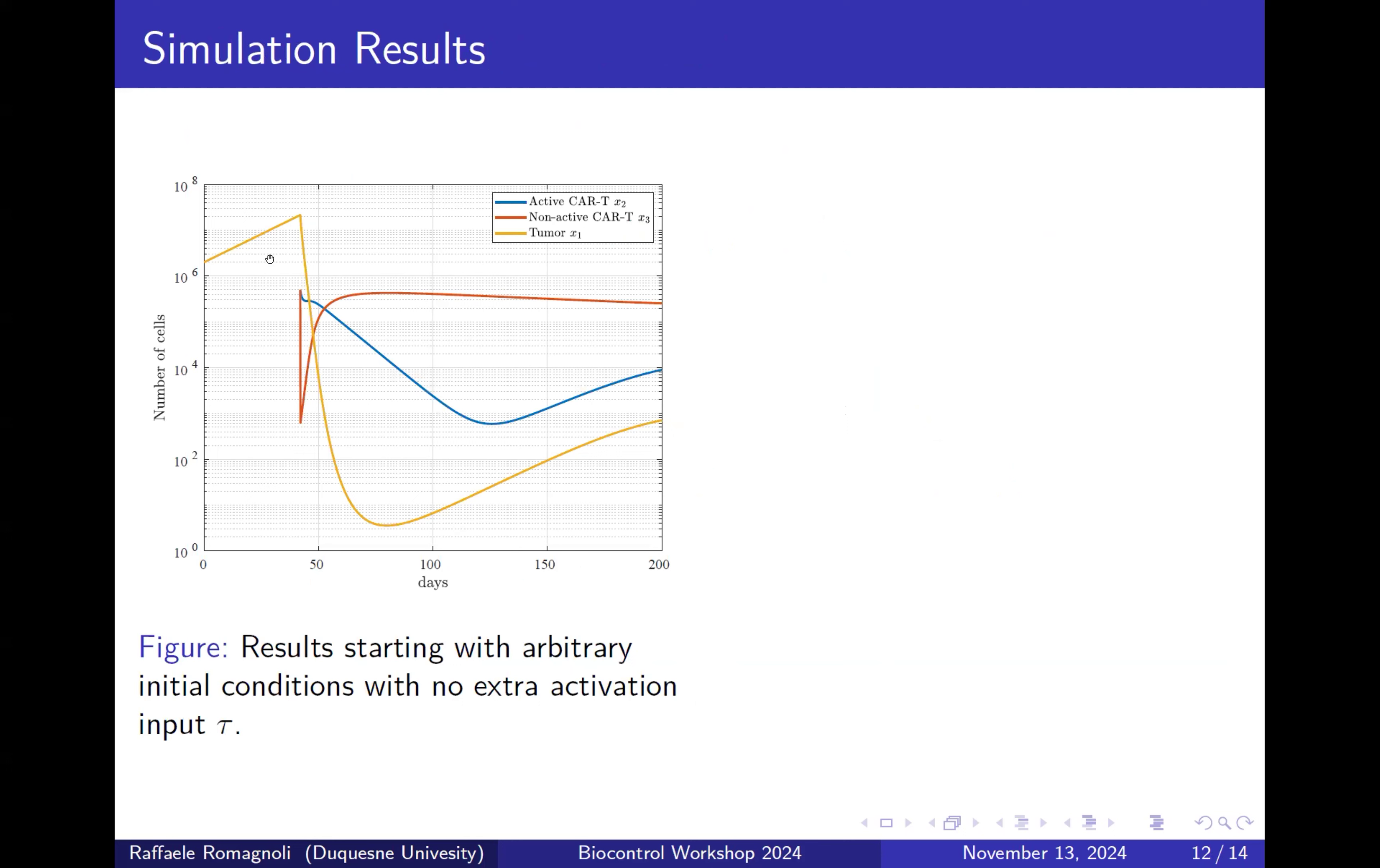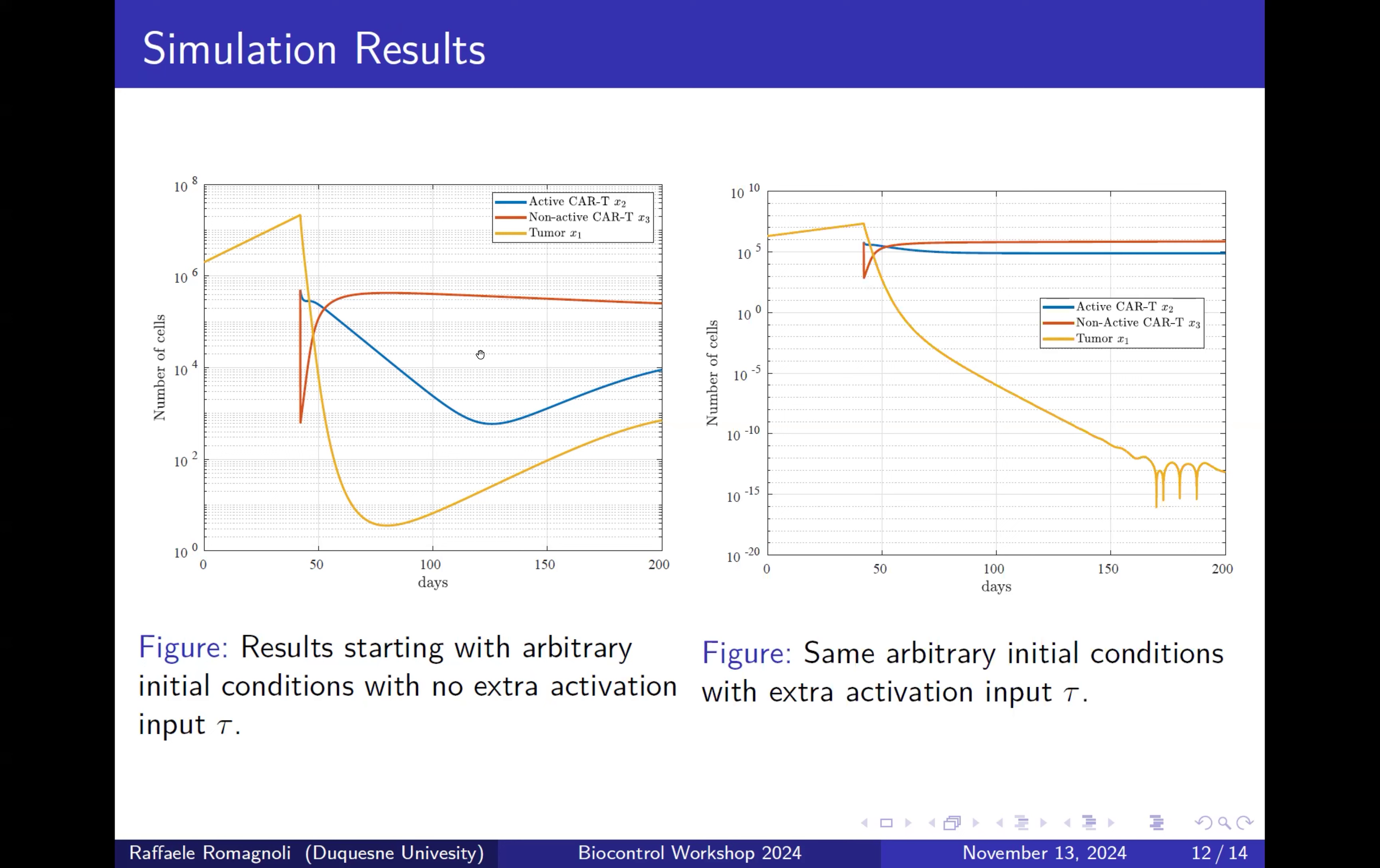Those are the results from the previous paper. Here we have a growth of the tumor, and after 40 days we start the therapy. We start from an arbitrary initial condition. We can see that the tumor can grow again because the point X1 equals zero is not asymptotically stable. Instead, if we use this extra activation input, we can achieve here tumor clearance in practice, because the value of the tumor goes very low.